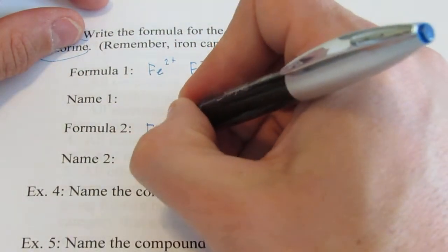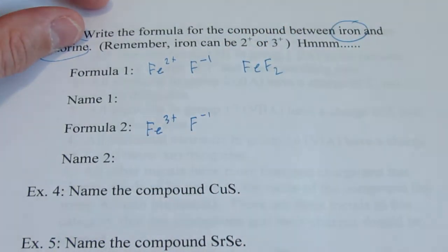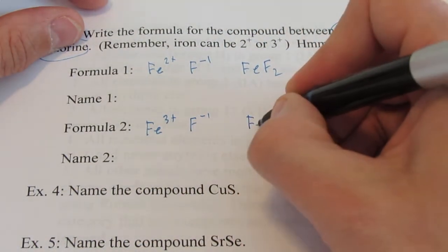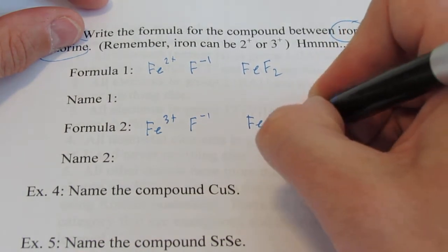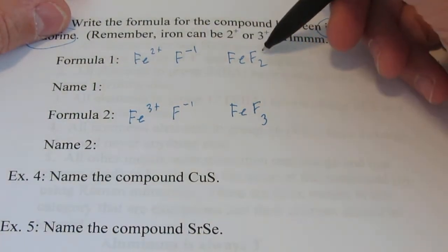Formula 2, we would take the iron with the 3 plus charge with my fluorine. And that would be FeF3. Well, how would we name these? Well, you'd like to call this one iron fluoride. Right?